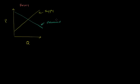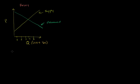Just like we did with the demand curve, instead of thinking of a price and thinking about how much quantity would be supplied, let's think about a given quantity and think about what the price would have to be in order for the producers to produce that quantity. This quantity axis is in thousands of pounds of berries — 1,000 pounds, 2,000 pounds, 3,000 pounds, 4,000 pounds, and 5,000 pounds.